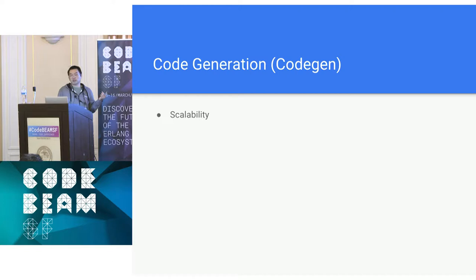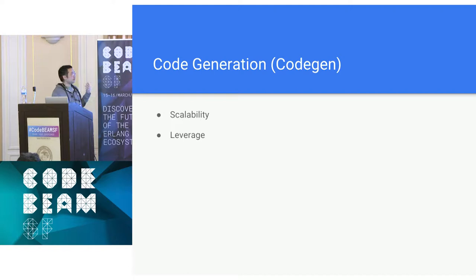Why did we decide to do code gen? There are a couple of reasons. The first is scalability — once you've built the first version, the second, third, fourth, and beyond should be trivial. The second is leverage. It's even better if you can utilize tools that the community has already built. If you build on top of tools and contribute back to them, it's going to save everyone time and effort.